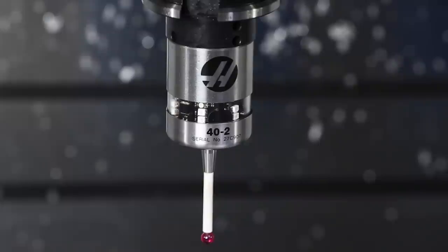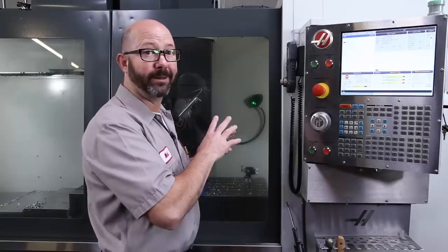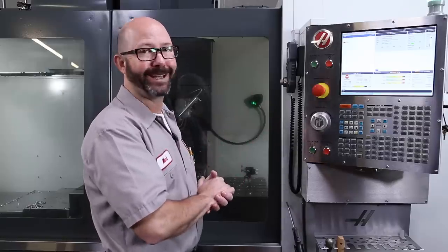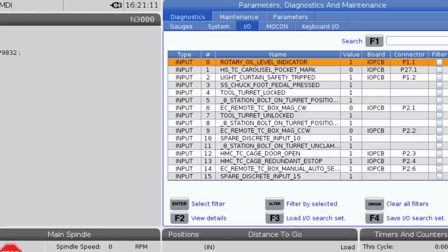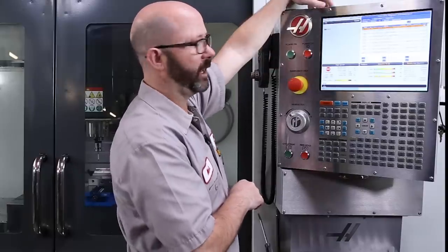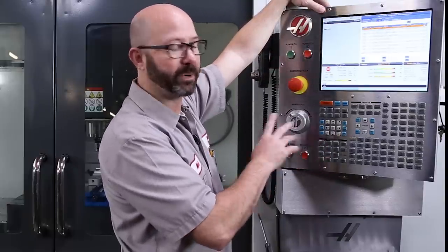My spindle probe is now on. The green lights are flashing on it. With the probe on, I want to show you something here on the diagnostic page. So this machine is a next-gen control. On the diagnostics page, I'm going to go to the IO tab. And I'm going to type in probe and press F1.